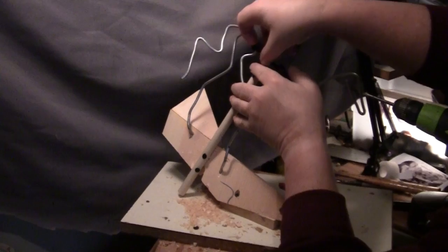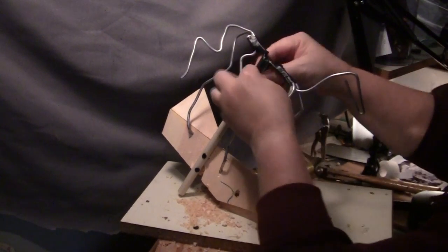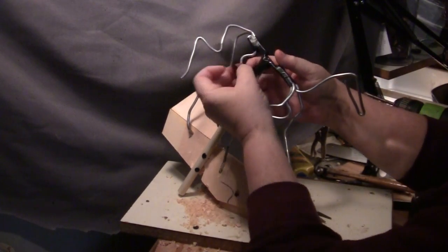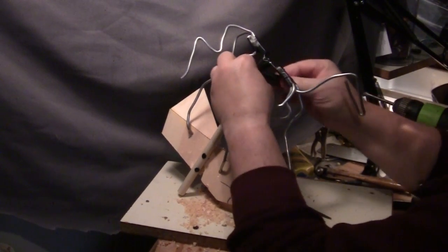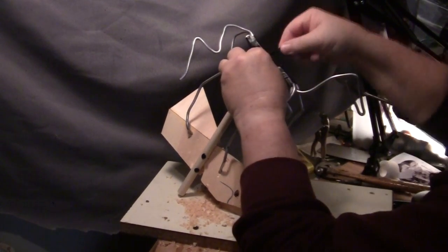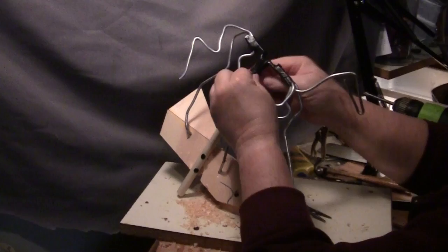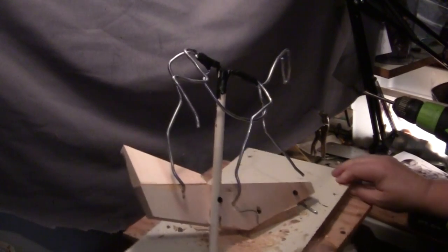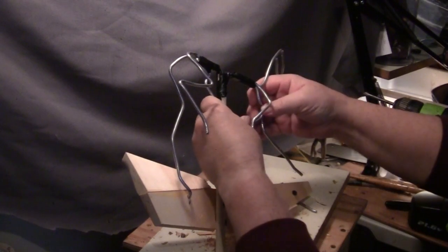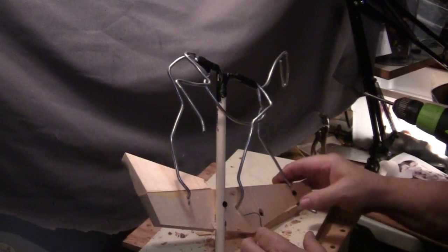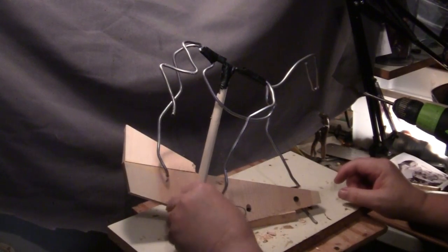By starting like that and going over the dowel, or over the back of the armature, around the dowel, and back over the armature. That will anchor it to the armature itself. And then once I start putting clay on it, it'll pretty much anchor itself.